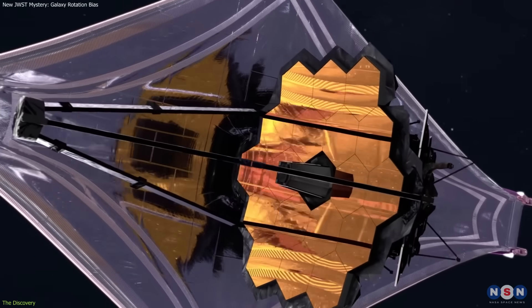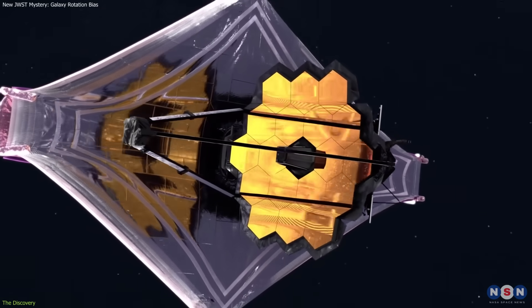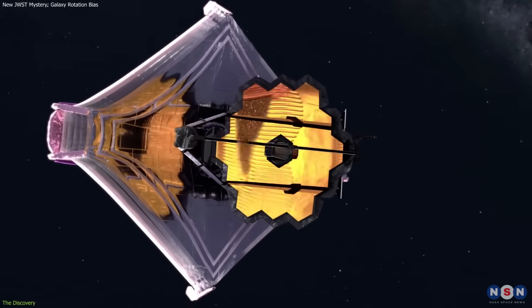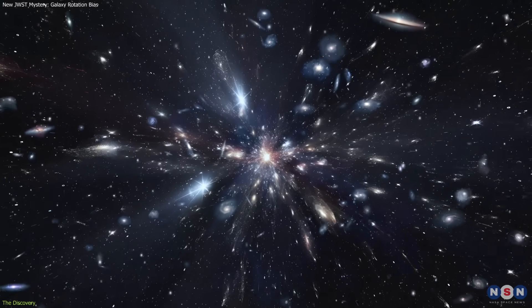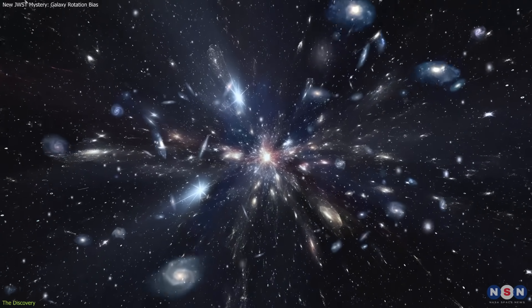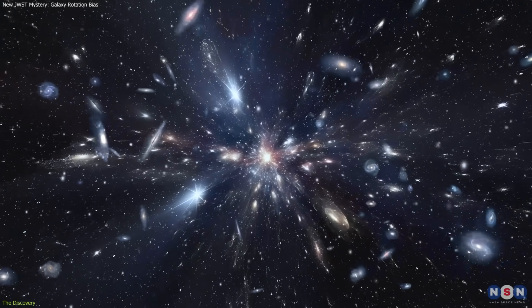What makes this case different is that JWST can look much farther back in time. If the same imbalance existed in the earliest galaxies, then it may point to a fundamental property of the universe itself, rather than a local quirk.